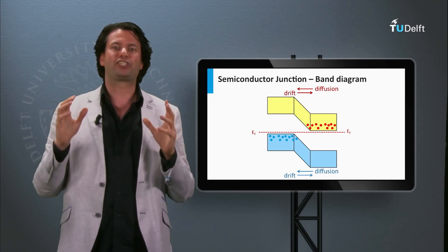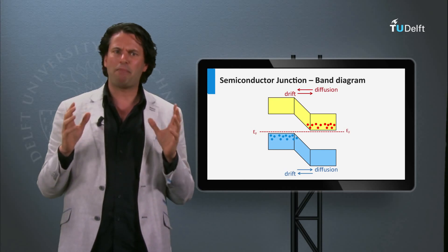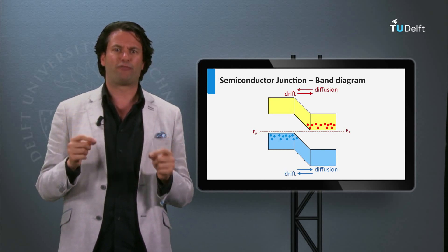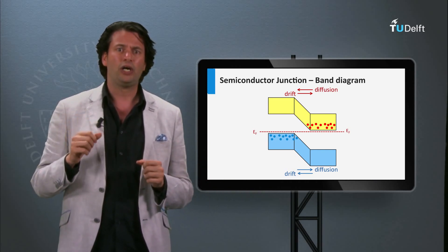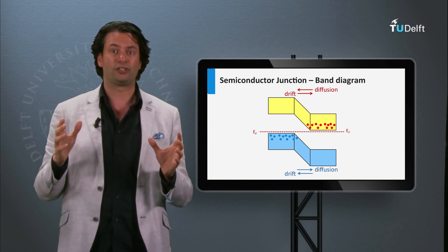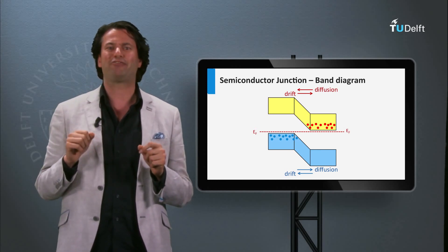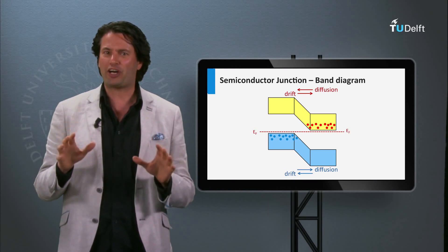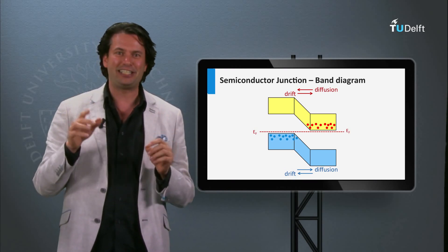We have now discussed a p-n junction in thermal equilibrium in the dark, in which diffusion and drift are in balance. We can manipulate this equilibrium in two ways: first, by applying a bias voltage over the p-n junction; and second, by illuminating the p-n junction to increase the minority charge carrier density — in that case we have created a solar cell. The working principle of the solar cell will be revealed in detail in the next final block of this week.